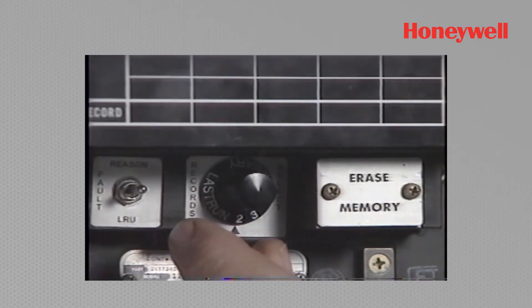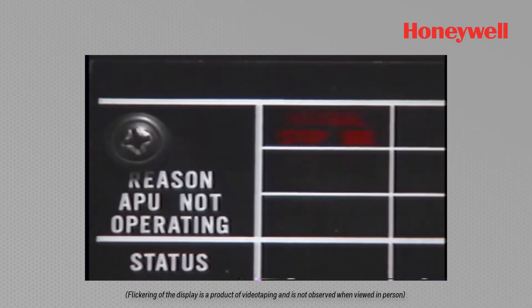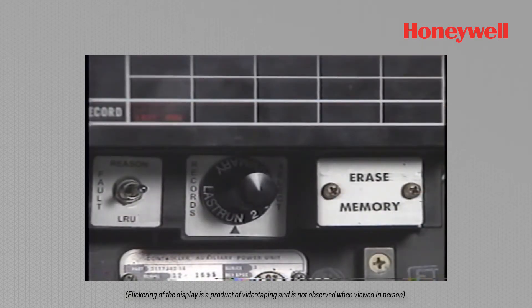If the last run fault display is normal stop signal, this implies that the APU was shut down by the aircraft system. This display will only be located in the last run position.